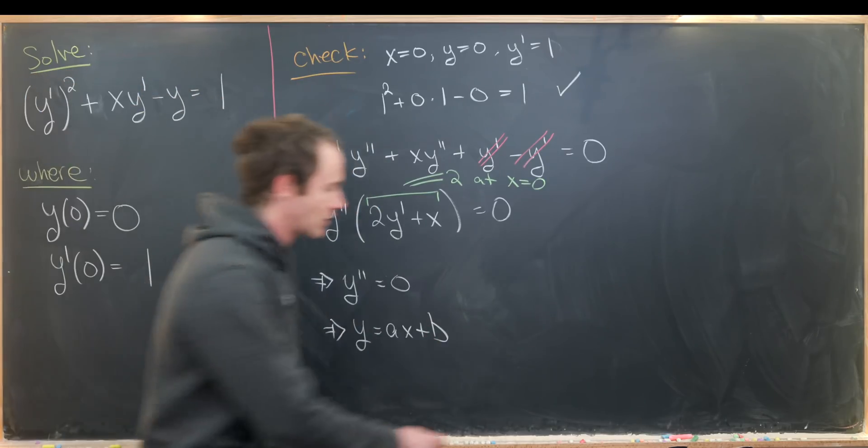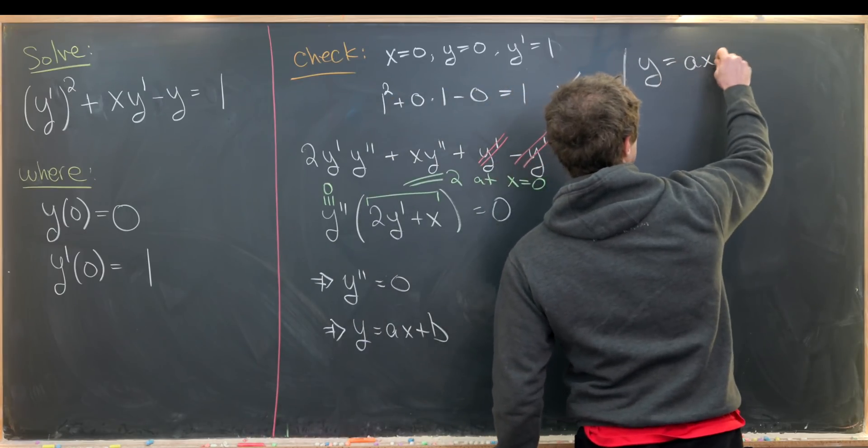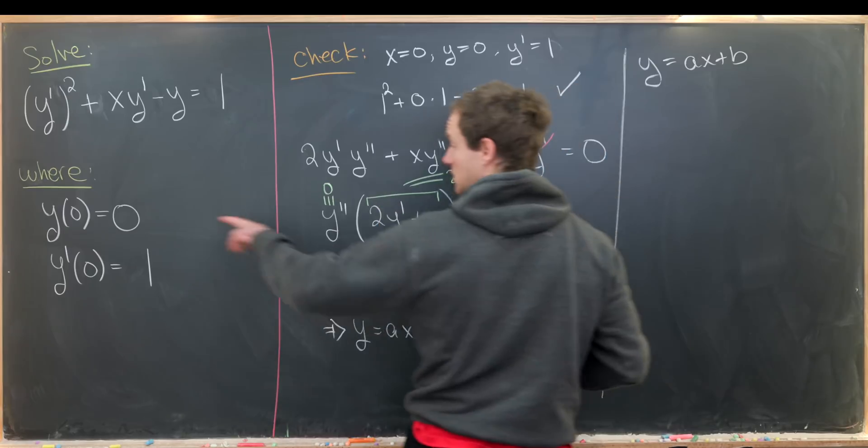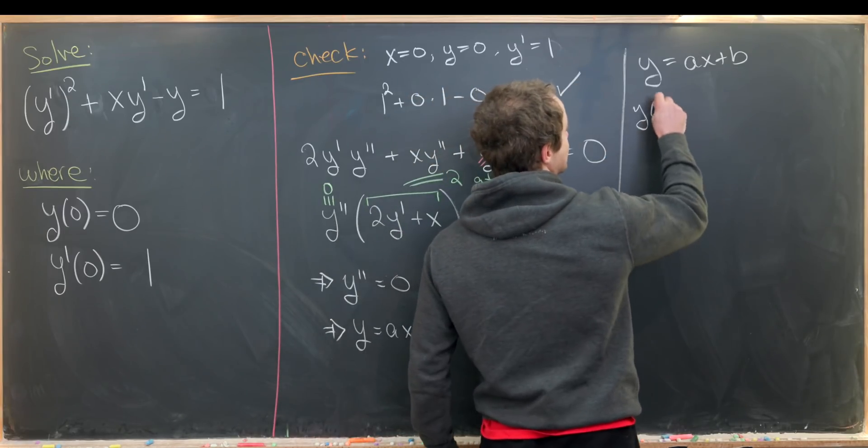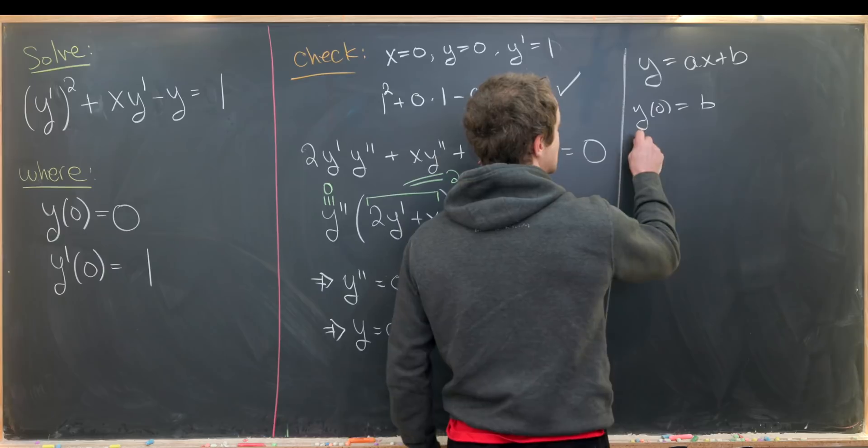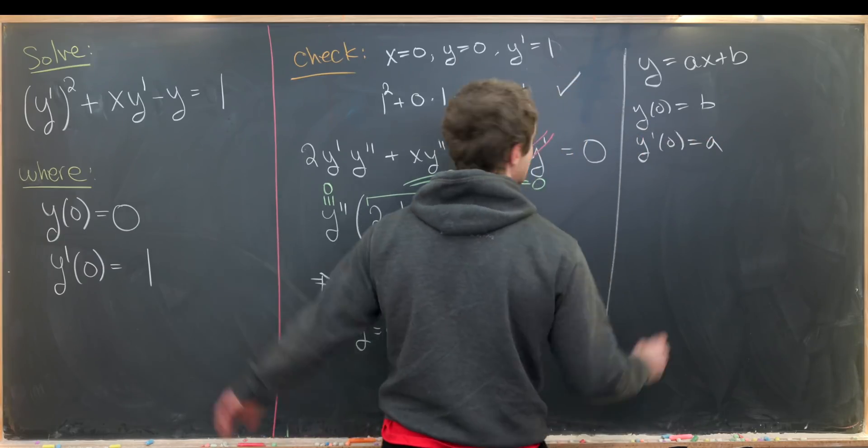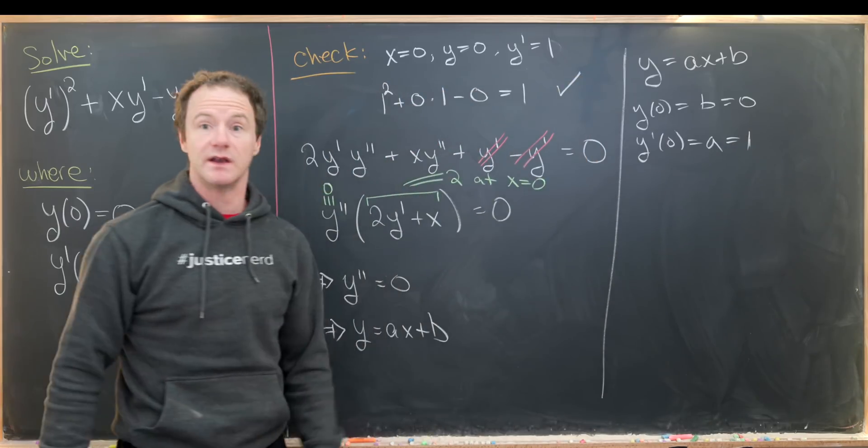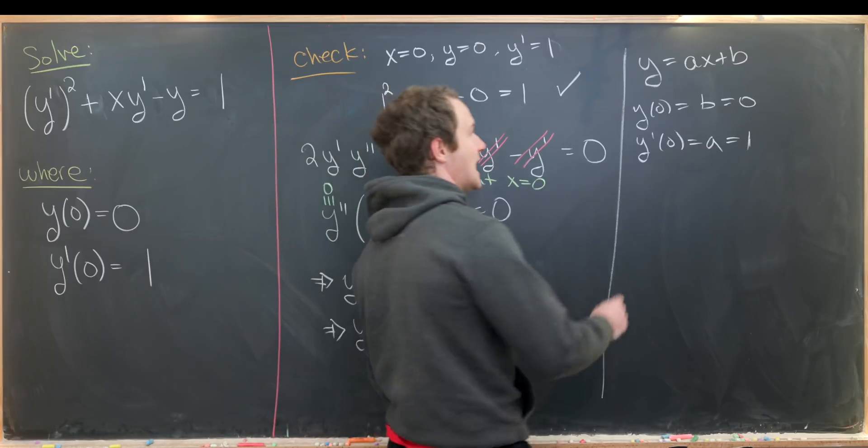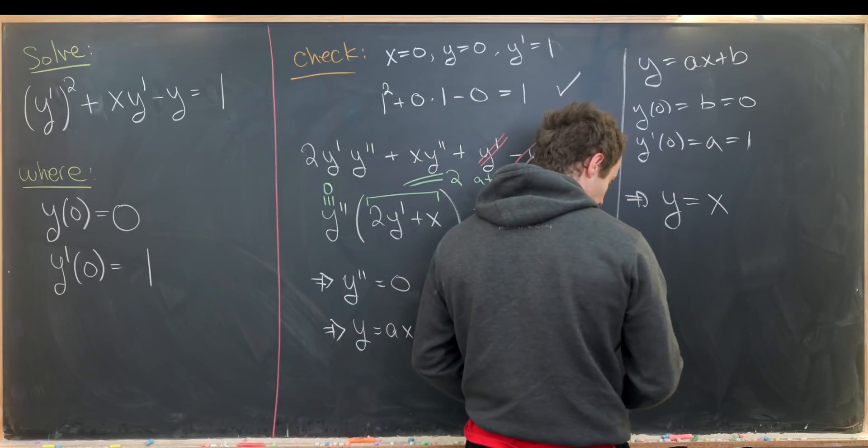Now, keeping in mind that we know y = ax + b, let's start using our initial conditions. So y(0) will be equal to b and y'(0) will be equal to a. But we're given that y(0) is 0 and y'(0) is 1. So we know b is 0 and a is 1, giving us the solution y = x.